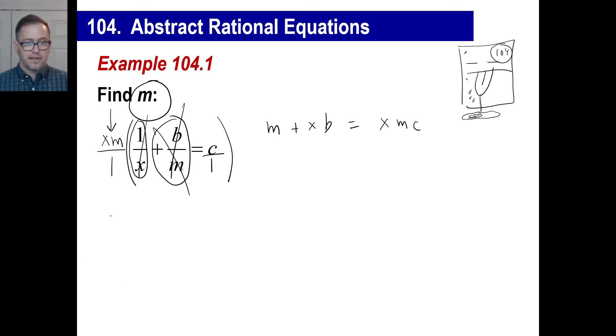If you had some equation like this, it said, you know, I don't know, 4m plus 7 equals, I don't know, 3m or something like that. What would you do to that 3m? You'd get it out of there, wouldn't you?